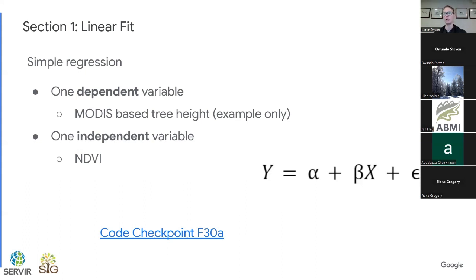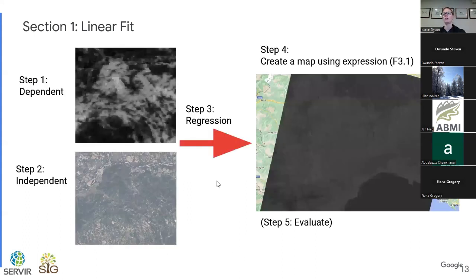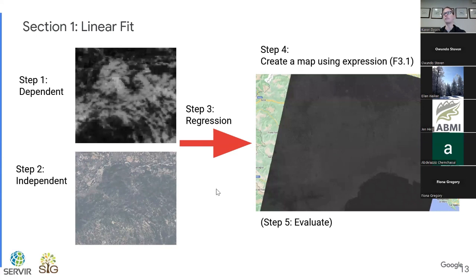In this first example, we're going to have one dependent variable — we will use MODIS-based tree height — and I'll point out this is an example only. You probably don't want to use this equation for extremely sensitive or high-value things. And we will use one independent variable, which will be NDVI. Thinking back to those steps, we're going to put together our dependent variable, our independent variable, then call the regression function, and once we have those estimates of alpha and beta, we're going to create a map using expressions.